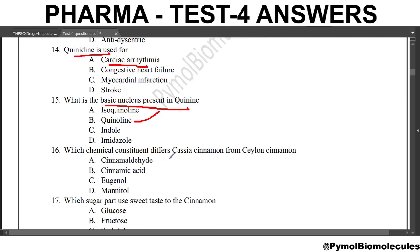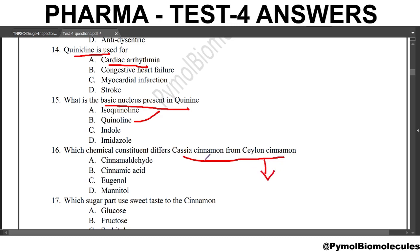Which chemical constituent differs Cassia cinnamon from Ceylon cinnamon? The answer is eugenol. Eugenol differs Cassia cinnamon from Ceylon cinnamon. In Ceylon cinnamon, both cinnamaldehyde and eugenol are present. But in Cassia cinnamon, only cinnamaldehyde is present, which gives the taste.